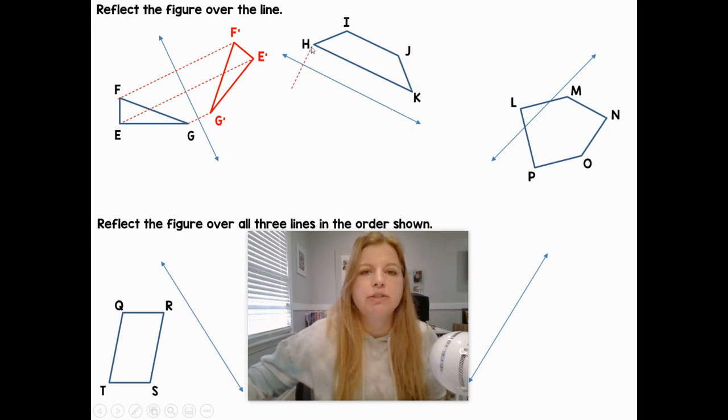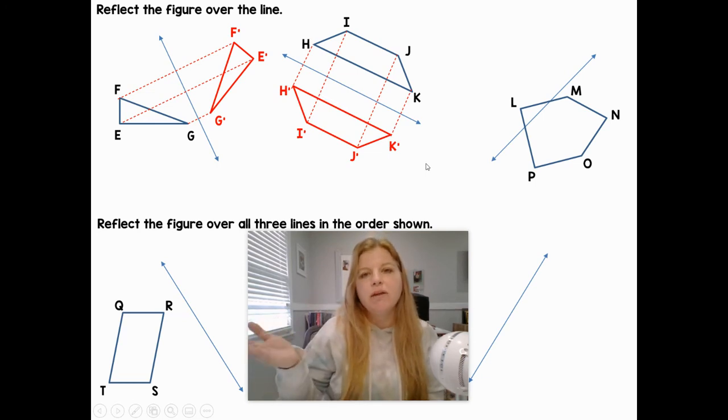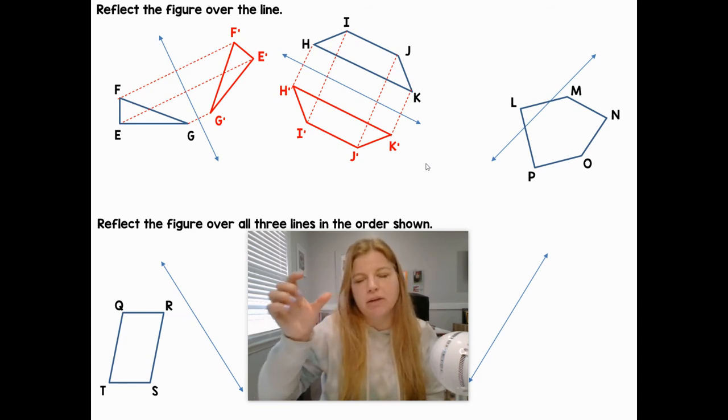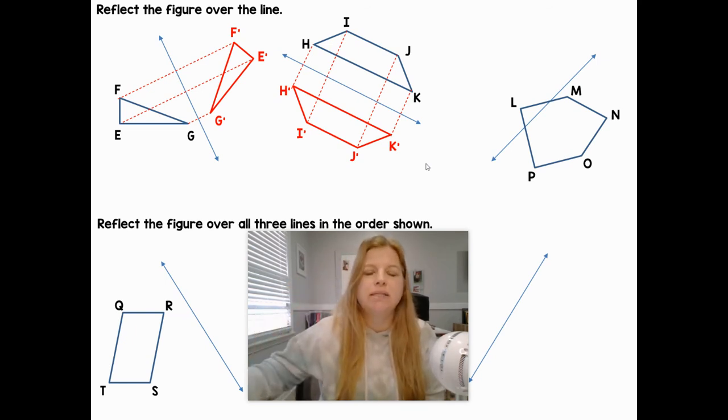Same thing here for this trapezoid. I'm measuring the distance from H perpendicular, this distance from the line to get H prime, I, another perpendicular line to get I prime, J, and then K. I think you would get the point. Visually you can see that these truly are perfect reflections. They're only as accurate as your measures are. It takes a little time to get used to that, but it should be generally pretty good.